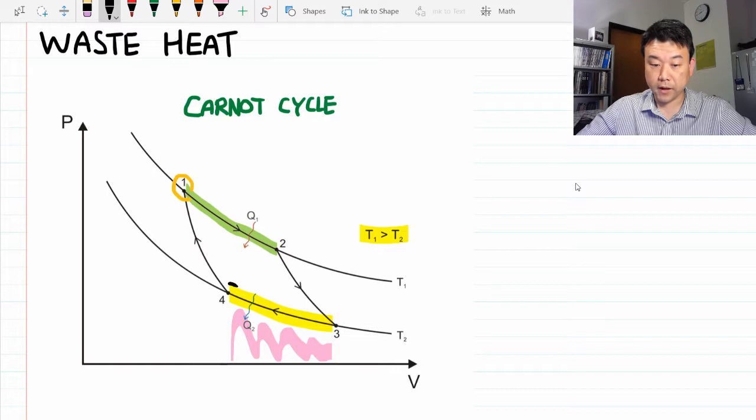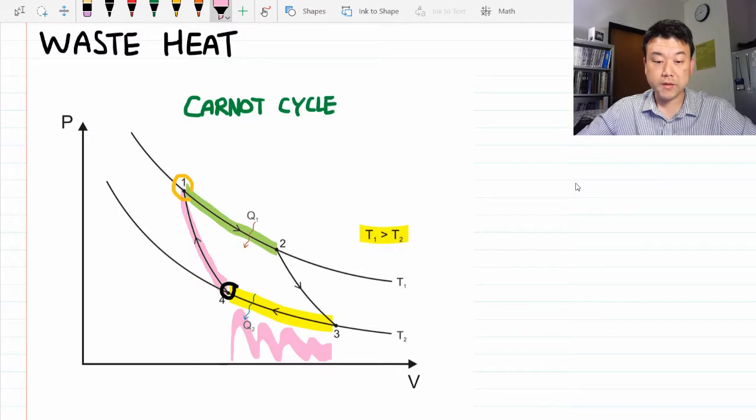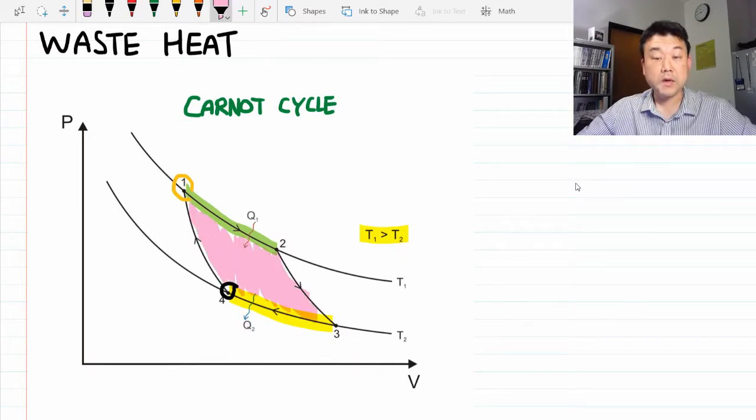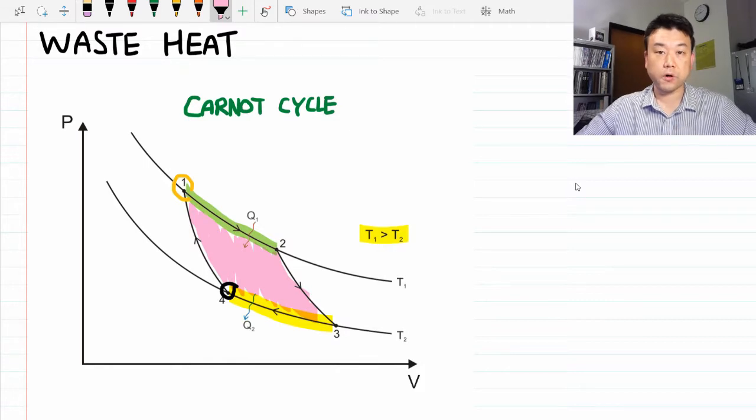Then, when you're at the right volume, you can raise the temperature back up to state 1, so that the engine can do positive work again. And this area that is enclosed by the loop is what represents the net work done.